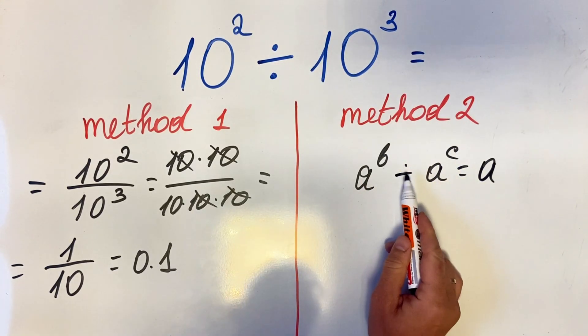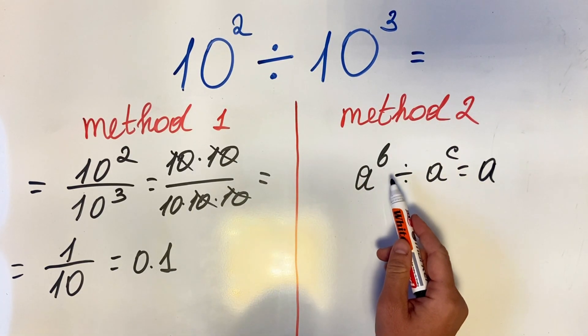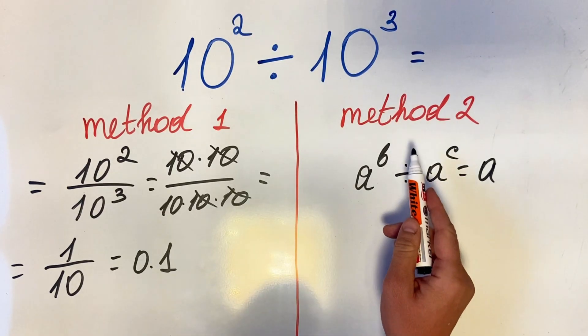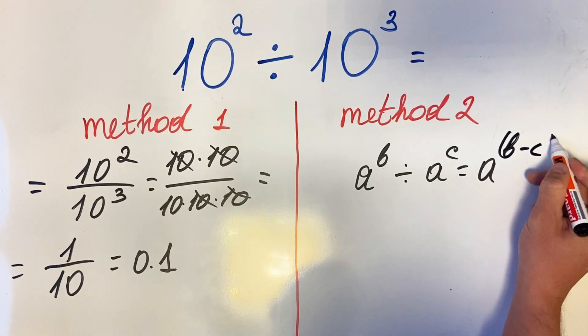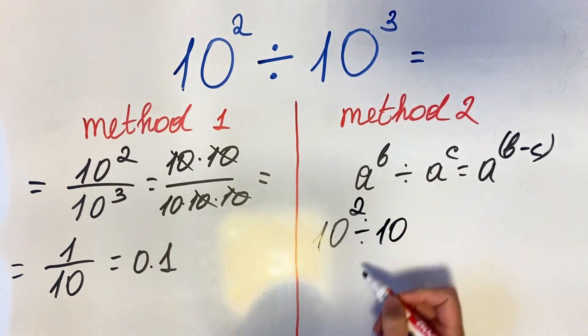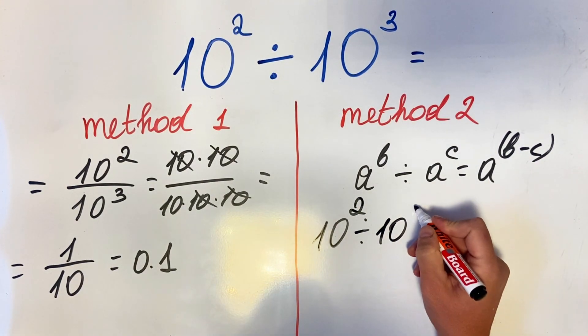the base is the same. If we have division, we do subtraction of the exponents; if we have multiplication, we do addition. In this case, we do subtraction: 10 squared divided by 10 cubed gives us 10 to the power of 2 minus 3, which is 10 to the minus 1.